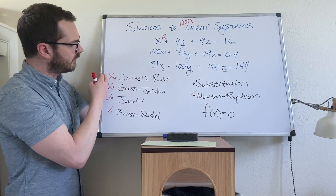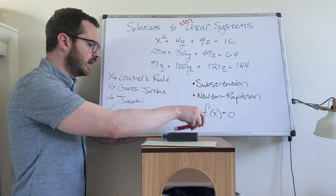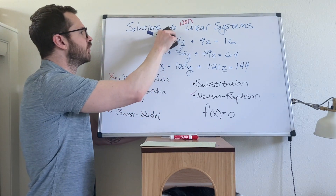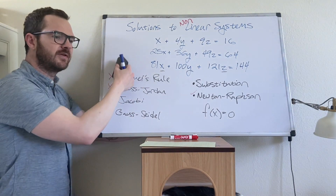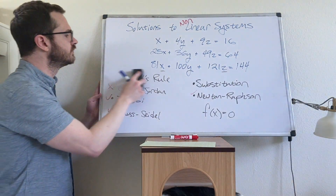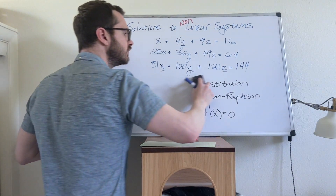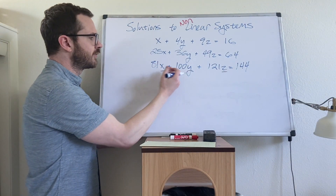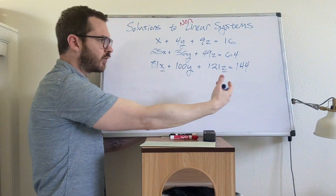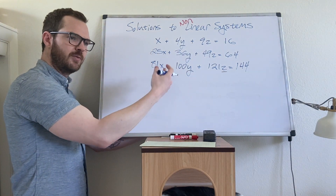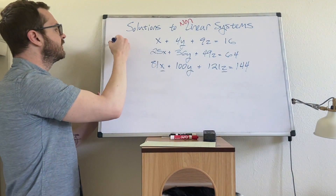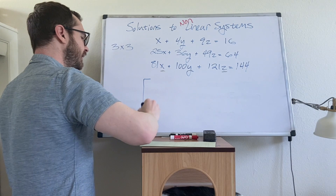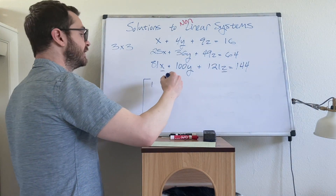If we want to start with Cramer's rule and Gauss-Jordan, we need to take this system and represent it with linear algebra. I'm going to take the three unknowns x, y, z and extract them, putting the remaining coefficients into a matrix. This system is three equations and three unknowns — a three-by-three system — so we'd expect a three-by-three coefficient matrix.